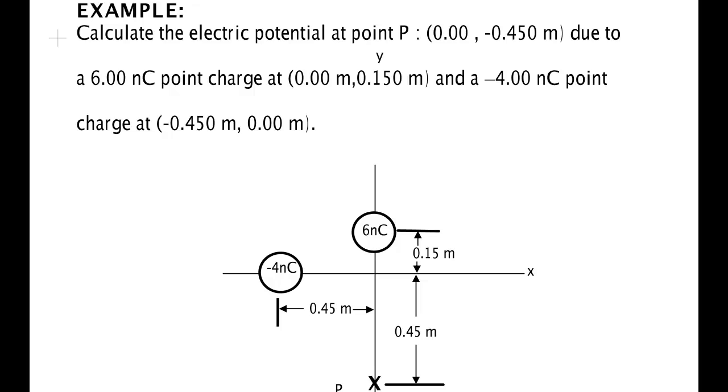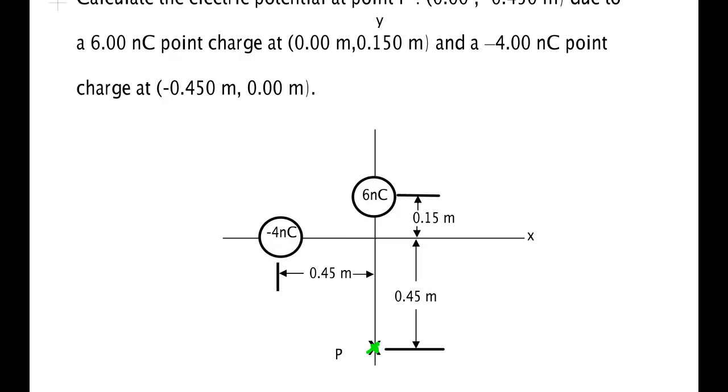Let's use this to do an example. It says calculate the electric potential at point P, which is located at x equals zero, y equals minus 0.45 meters. So here's point P right down here. It says that there's some charges, and the charges that I have in the problem is a six nanocoulomb charge here located at zero x, 0.15 meters y, and a minus four nanocoulomb point charge at minus 0.45 meters in the x and zero meters in the y.